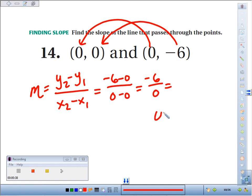So what would the slope of this line be? We would say it is undefined. If we were to graph those points, we'd see that it's a vertical line.